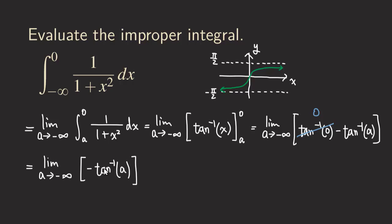Don't forget there was a minus sign in front. So we have negative times negative π/2, which gives us π/2. This improper integral is convergent and equals π/2.